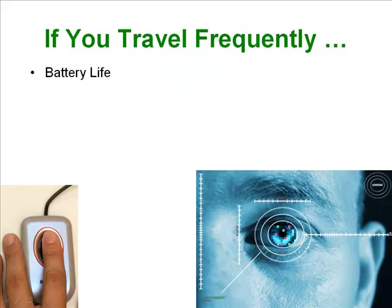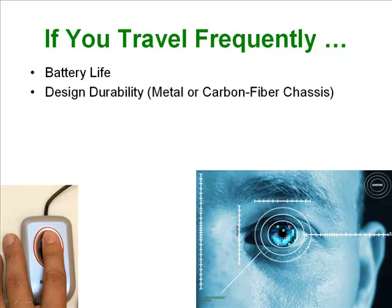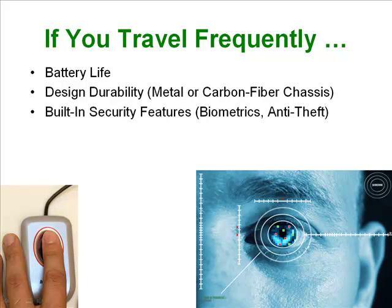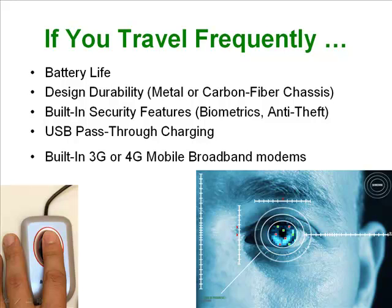If you travel frequently, you'll want to consider things such as battery life and design durability — generally you want to get a metal or carbon fiber chassis rather than the typical ABS plastic. Built-in security features such as biometrics for reading eye prints or fingerprints, and anti-theft software and devices. USB pass-through charging lets you plug your smartphone into the USB port and charge it up even though the laptop is not turned on. And a built-in 3G or 4G mobile broadband modem will let you use your laptop as a Wi-Fi hotspot for your cell phones, rather than using up your monthly data bandwidth for your cell phone carrier.